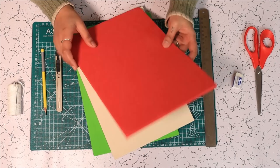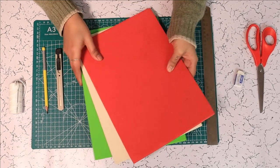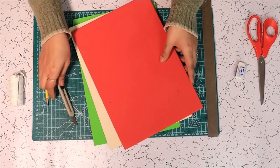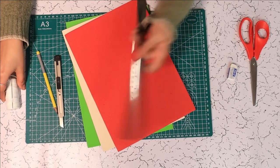For this star garland, we are using three colors of foam sheets, a paper cutter, pencil, thread and needle, and a ruler.